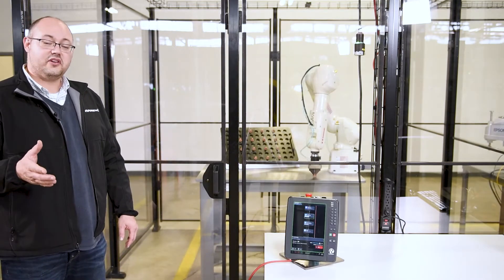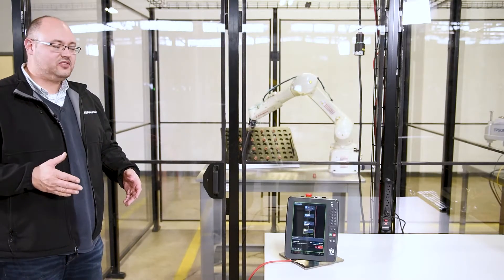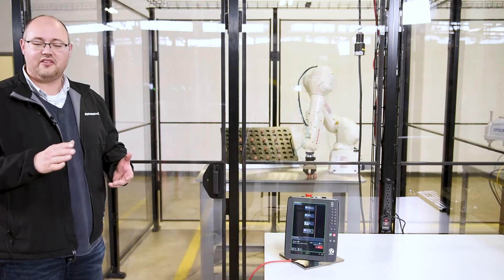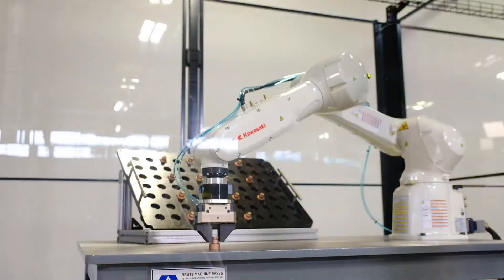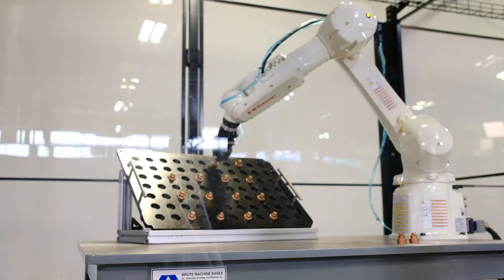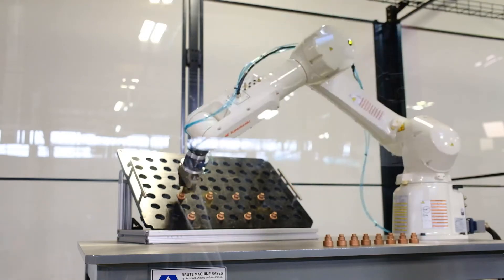So we started with our parts presentation fixture in one location, used the three-point frame to align to the surface because it's at an odd angle, made it very easy to work with. But our process changed and we had to move our parts presentation fixture. Using the three-point frame feature we were able to very quickly realign where that surface was and we're up and running in no time.